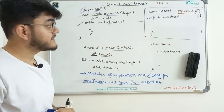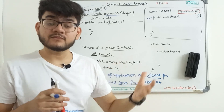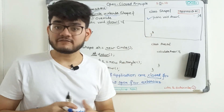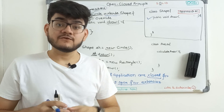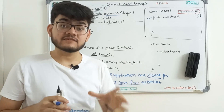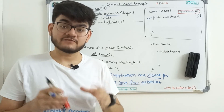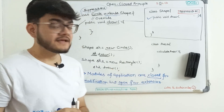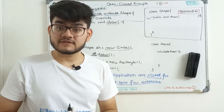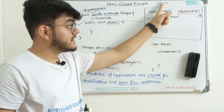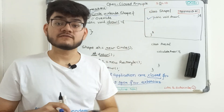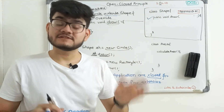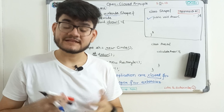That's the open-close principle. There are more disadvantages to approach one — if you think of more, let me know in the comments; it will be very helpful. That's all for this tutorial. In the next tutorial, we will study a very important principle called the substitution principle. We'll see you in the next tutorial. Thanks for watching.